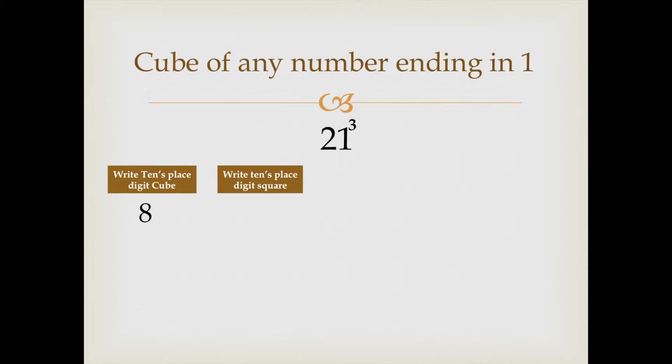In the second part, we will write down the square of 10th place digit. 10th place digit number is 2 and the square of 2 is 4. Write 4.